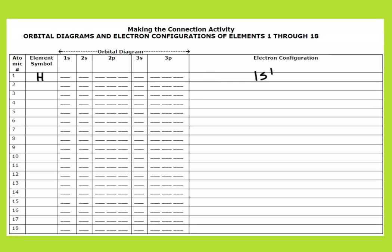It's 1s1. So on an orbital diagram, you represent these electrons with arrows. The first orbital is 1s. How many electrons should I have in it? One. I represent that with an arrow — and when I say arrow, it's more like a half arrow. It just has one little point; it doesn't have one on the other side.